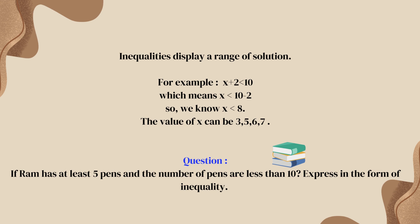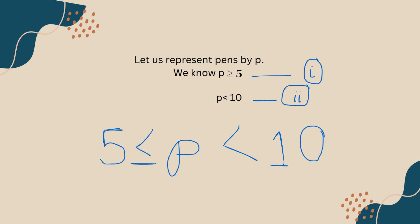Now it's question time. The question states that Ram has at least 5 pins and the number of pins is less than 10. Express this in the form of an inequality. When we see the term 'at least', we use the sign greater than or equals to. Representing pins by P, we can write P is greater than or equals to 5. At the same time, the value of pins is less than 10. Combining both, our answer is 5 ≤ P < 10.